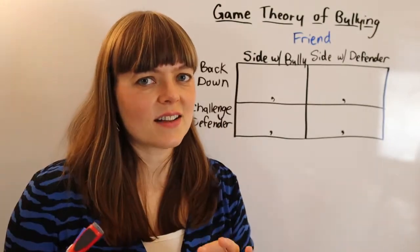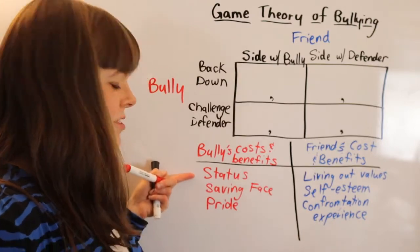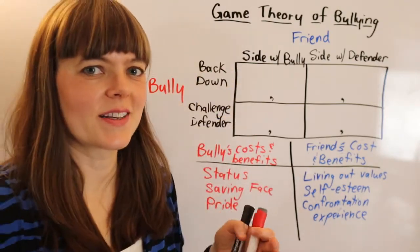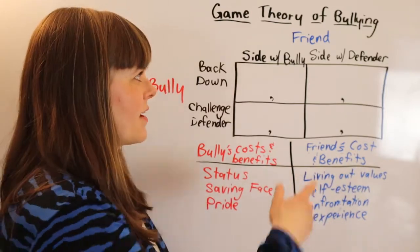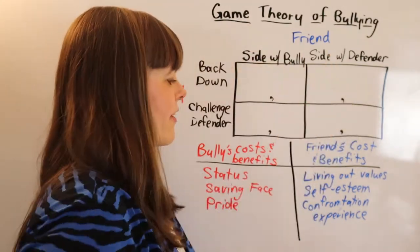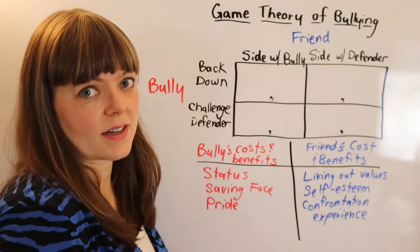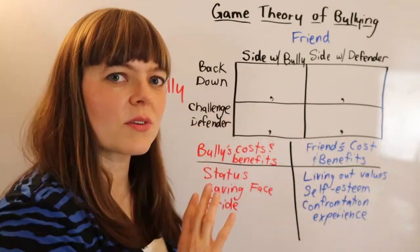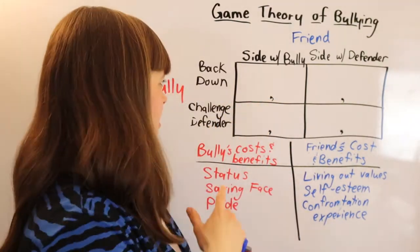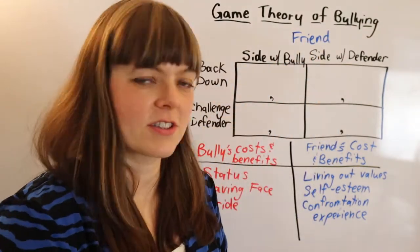I'm not going to do as detailed an analysis as in the previous video — I'll just write down some of the incentives. The bully cares about their status in the group, saving face, and pride. The friend cares about living out their own values — they know siding with the defender is the right thing, and that would increase their self-esteem. But they also fear confrontation, which may depend on how mean or vindictive the bully is. To fill out the payoff matrix, we can identify which of the four boxes is each player's favorite and least favorite.